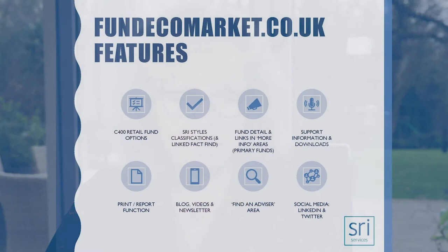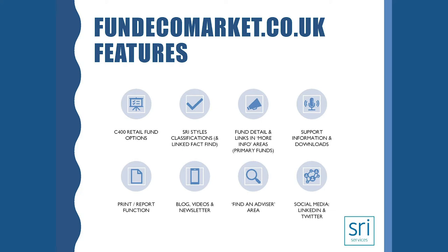This last slide gives a brief summary of the information on Fund EcoMarket. There are around 400 fund options, with the majority of information sitting in the primary fund options. You've got the SRI classification system that links into the SRI Style Finder tool to help make the advice process more straightforward. There are print and report functions throughout the tool that enable you to maintain a proper audit trail, which is absolutely essential for the advice process. There's also support information, a blog, news, and explanations of the different SRI styles and filter options.